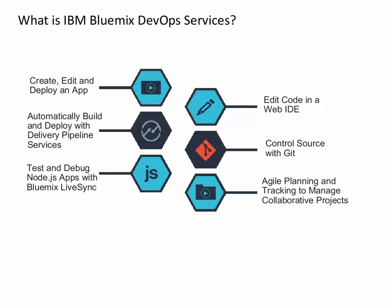IBM Bluemix DevOps Services is a software-as-a-service on the cloud that supports continuous delivery. With Bluemix DevOps Services, you can develop, track, plan, and deploy software all in one place. From your projects, you can access everything that you need to build all types of apps. To simplify teamwork, use the collaboration tools. After you build an app, you can deploy it to the IBM Bluemix Cloud Platform. You can go from source code to a running app in minutes.